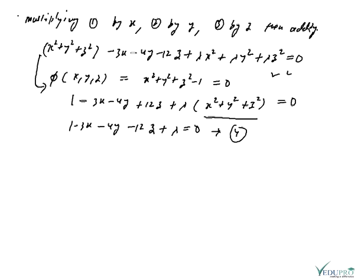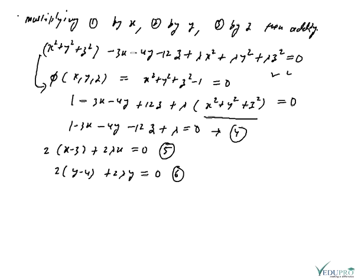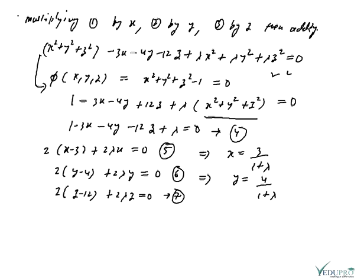When we substitute the partial derivative values into equations 1, 2, 3, from equation 1 we get: 2(x−3) + 2λx = 0 — equation 5. From equation 2: 2(y−4) + 2λy = 0 — equation 6. From equation 3: 2(z−12) + 2λz = 0 — equation 7. Separating x, y, z from equations 5, 6, 7: x = 3/(1+λ), y = 4/(1+λ), z = 12/(1+λ).